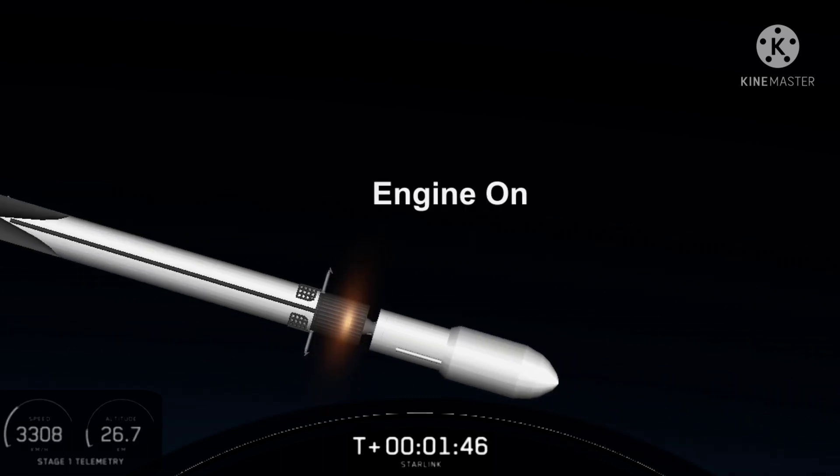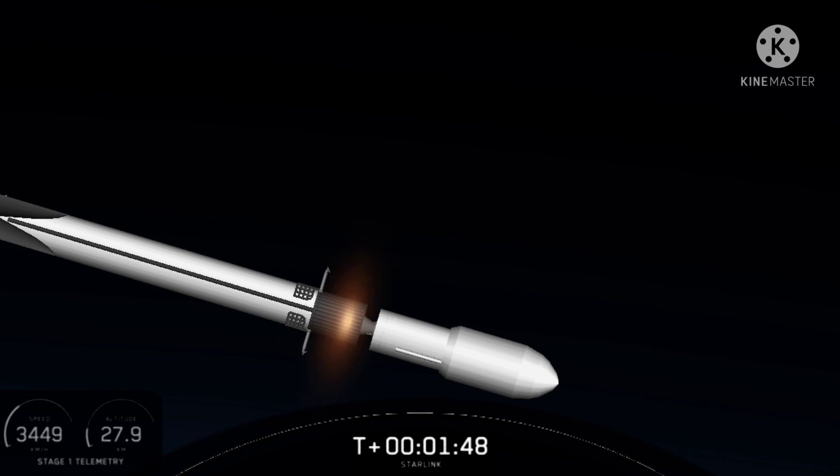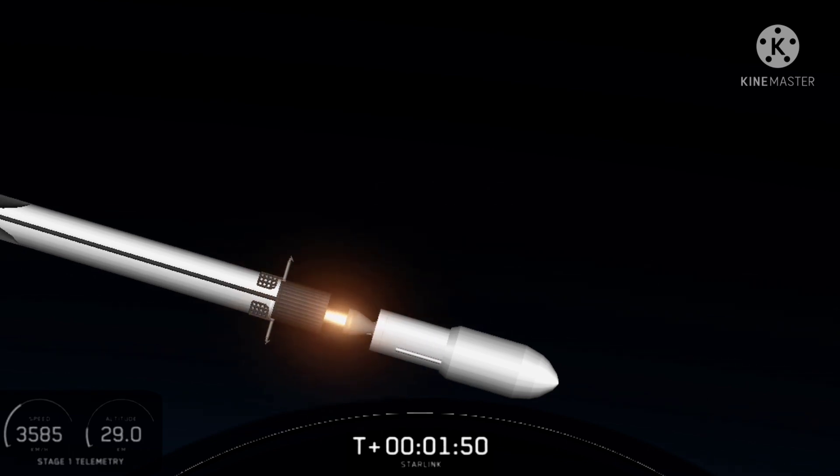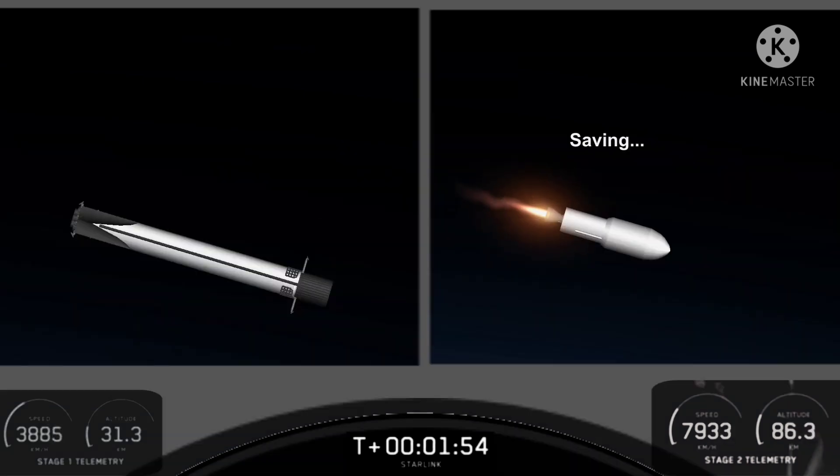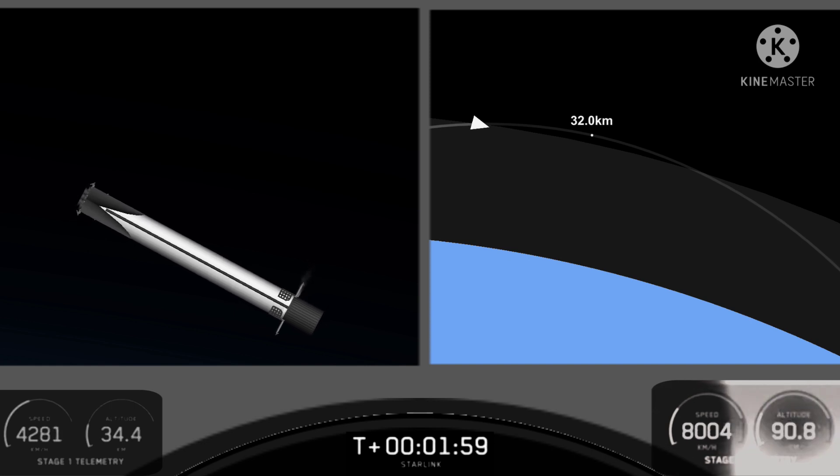During stage separation, the first and second stages will separate from one another. The first stage will make its way back to our targeted landing zone. In this case, it's the drone ship Of Course I Still Love You, currently waiting in the Pacific Ocean.